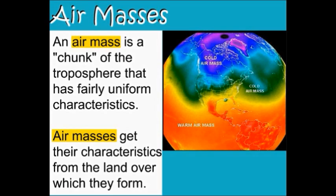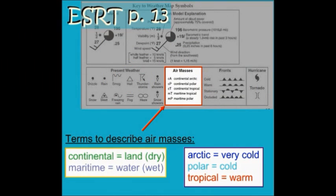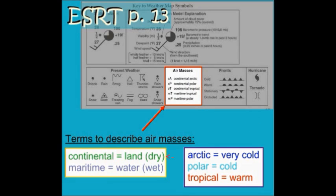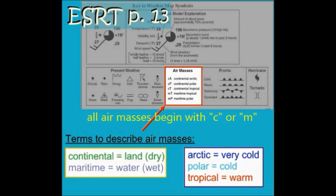An air mass is the term we use to describe a chunk of the troposphere that has fairly uniform characteristics. Air masses get these characteristics from the land or water over which they form. In our reference table, we identify five different types of air masses. A lowercase c means continental — an air mass that formed over land, which is a dry air mass. A lowercase m means maritime — an air mass that formed over water, which is a wet air mass.